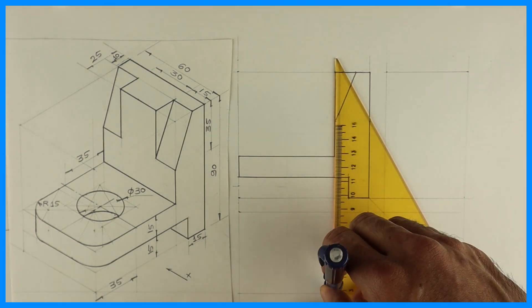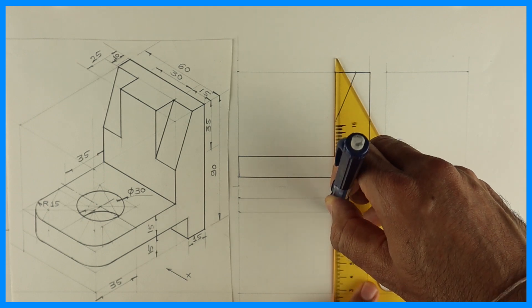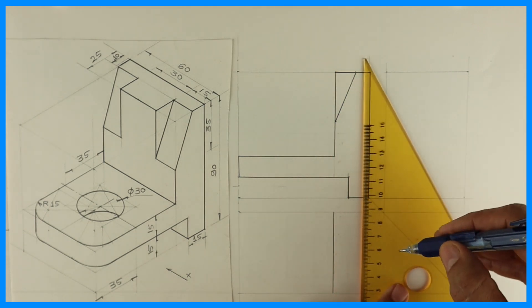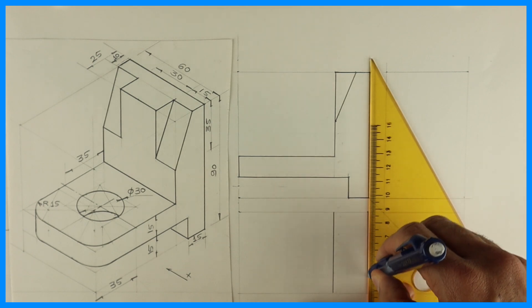Now we'll see top view. We'll draw this line. See that T portion, we'll try and draw that first.